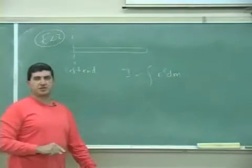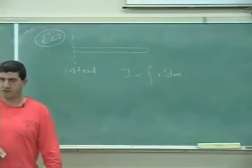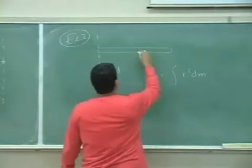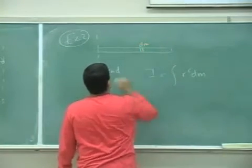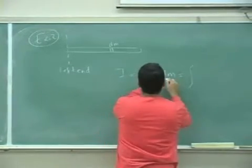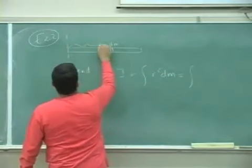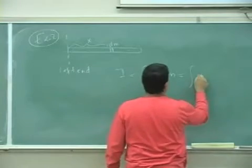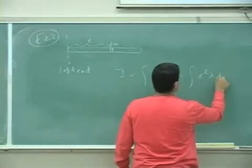We're going to use the integration version. So I'm going to take a little piece dm, and I'm going to say the distance from here to here is x. So x squared dm is going to be lambda dx.